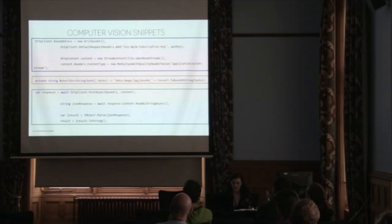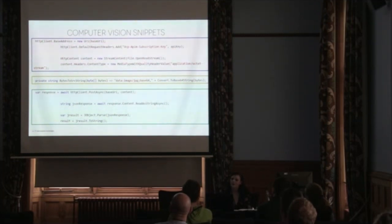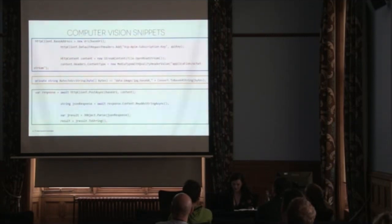Basically we just have an HTTP request to the Computer Vision service which includes the image file. The file must be read as a stream object, serialized into a base64 string, and wrapped into a byte array. This is the same for a lot of the Azure Cognitive Services because we're sending image files — and we can also send video files and get frame-by-frame information out of every frame.